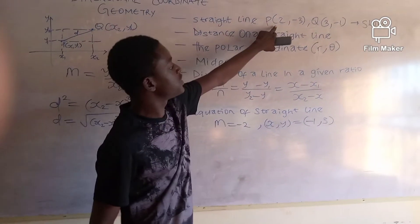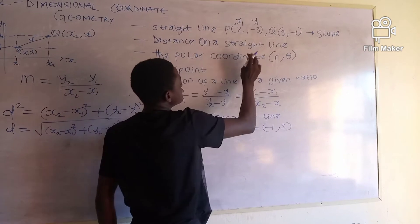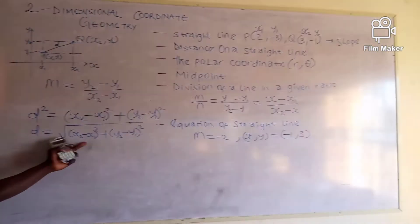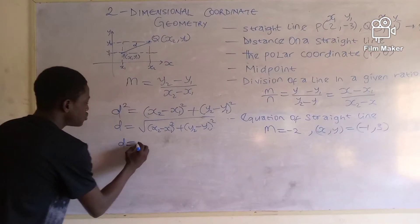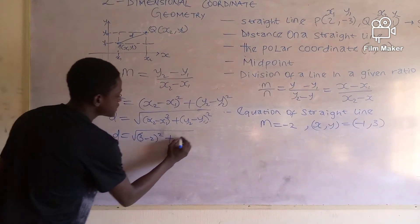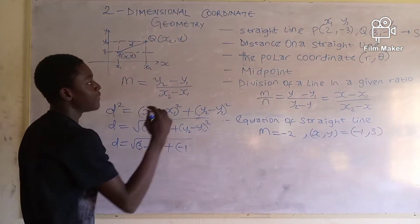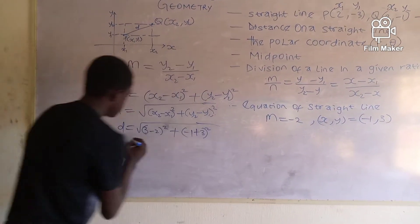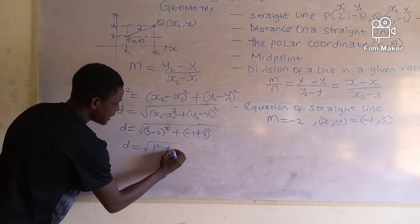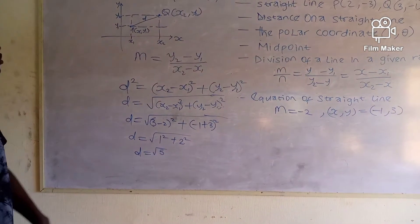We have a question: P is (2, -3) and Q is (3, -1). So x1 = 2, y1 = -3, x2 = 3, y2 = -1. Putting these into the distance formula: d = √[(3 - 2)² + (-1 - (-3))²] = √[1² + 2²] = √[1 + 4] = √5. So the distance of that straight line is √5.